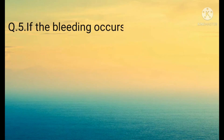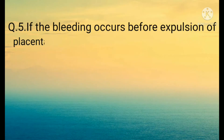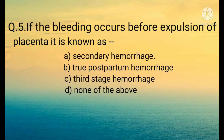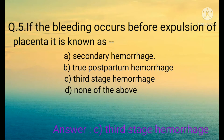Question number five: If the bleeding occurs before expulsion of the placenta, it is known as: A) Secondary hemorrhage, B) True postpartum hemorrhage, C) Third stress hemorrhage, D) None of the above. The correct option is C) Third stress hemorrhage.